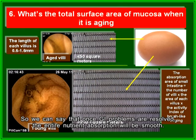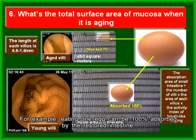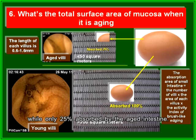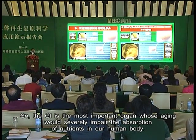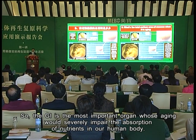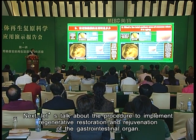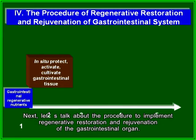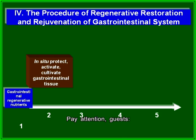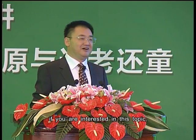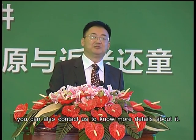Once GI problems are resolved, the entire nutrition absorption will be smooth. For example, eating one egg can be 100 percent absorbed by the restored intestines, while only 25 percent is absorbed by the aged intestines. The GI is the most important organ whose aging would severely impair nutrient absorption. After my lecture, if you are interested in this topic, you can contact us to know more details.